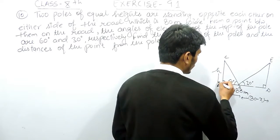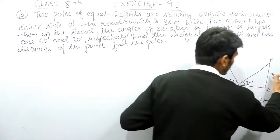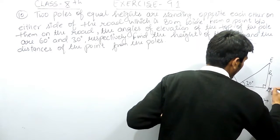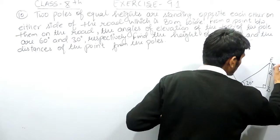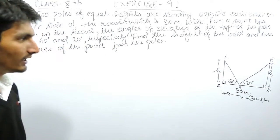If I consider the height of the pole as H meters, then the other pole must also be H meters because both poles are given to be of equal height.